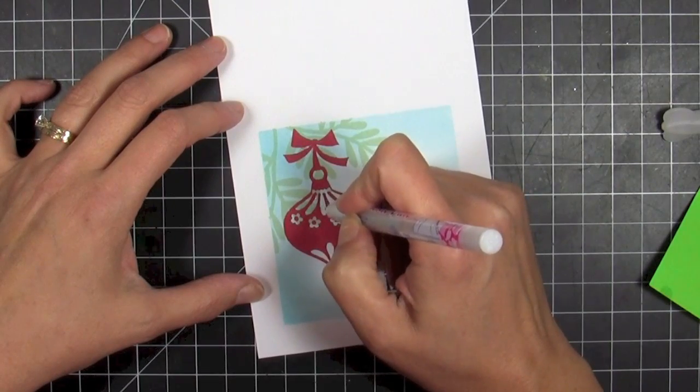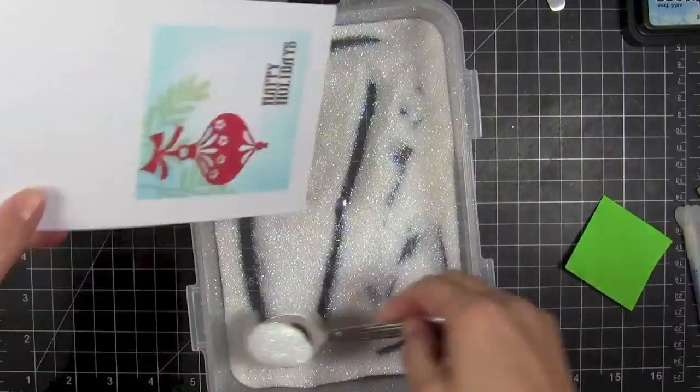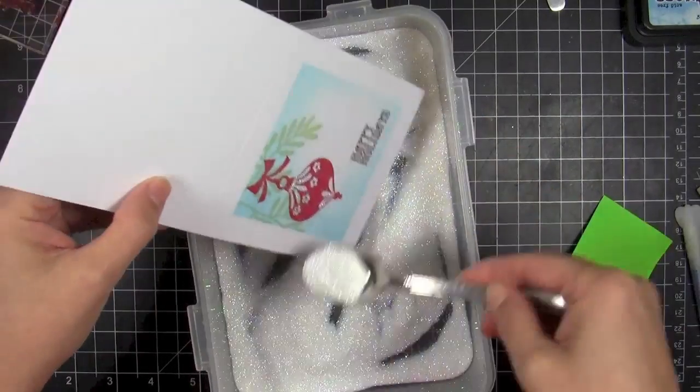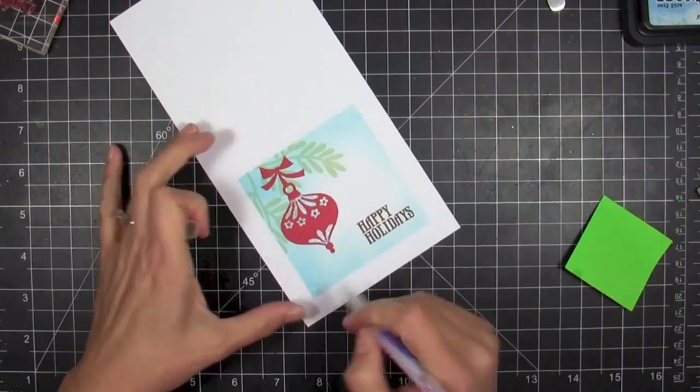I'm going to use the Sakura Quickie Glue Pen to add some glue to the ornament in different spots, and then I'm going to coat it with some Prisma glitter because a little glitter is good and more is better.